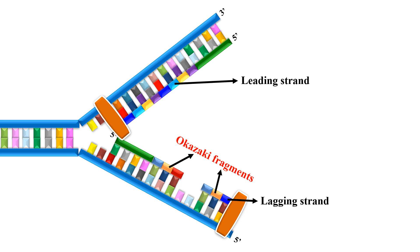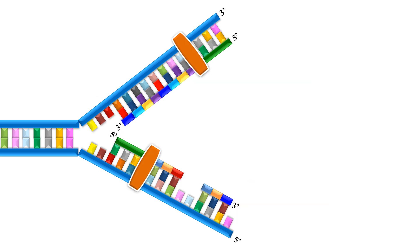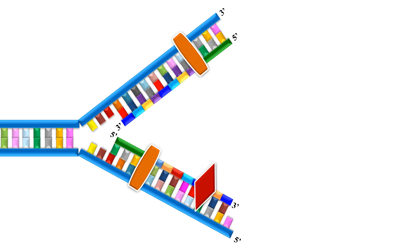DNA polymerase created two new strands: one strand in a continuous manner, known as the leading strand, and the other strand in the form of small fragments called Okazaki fragments, known as the lagging strand. In the next step, these gaps will be filled by another enzyme — DNA ligase — which will seal the gaps by adding nucleotides.